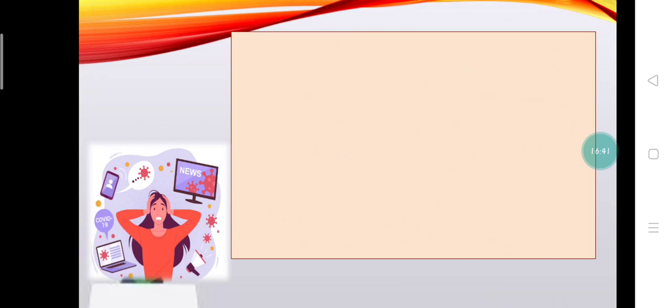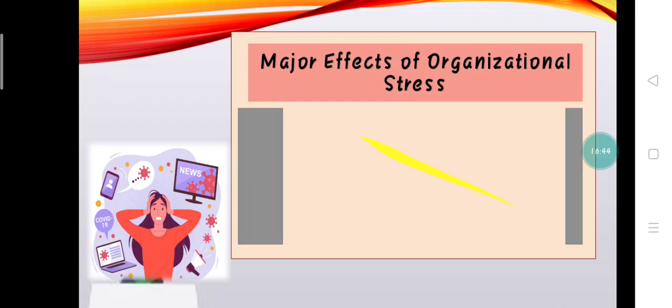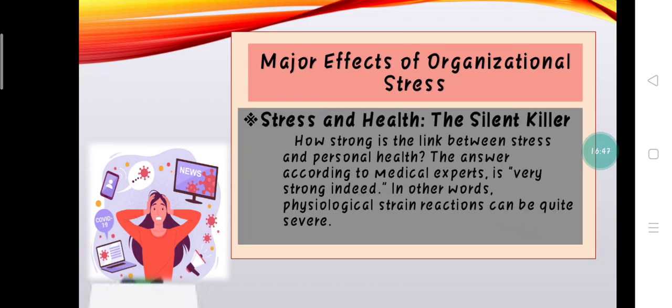The last major effect of organizational stress is the impact on health — the silent killer. How strong is the link between stress and personal health? The answer, according to medical experts, is very strong indeed. Physiological strain reactions can be quite severe. In fact, some authorities estimate that stress plays a role in anywhere from 50 to 70 percent of all forms of physical illness. Moreover, these figures include some of the most serious and life-threatening ailments known to medical science.